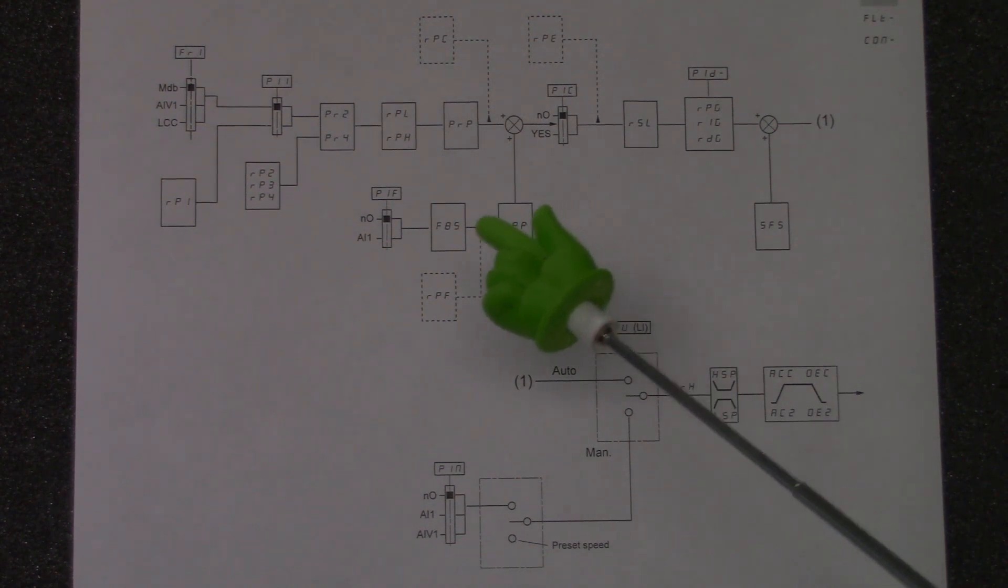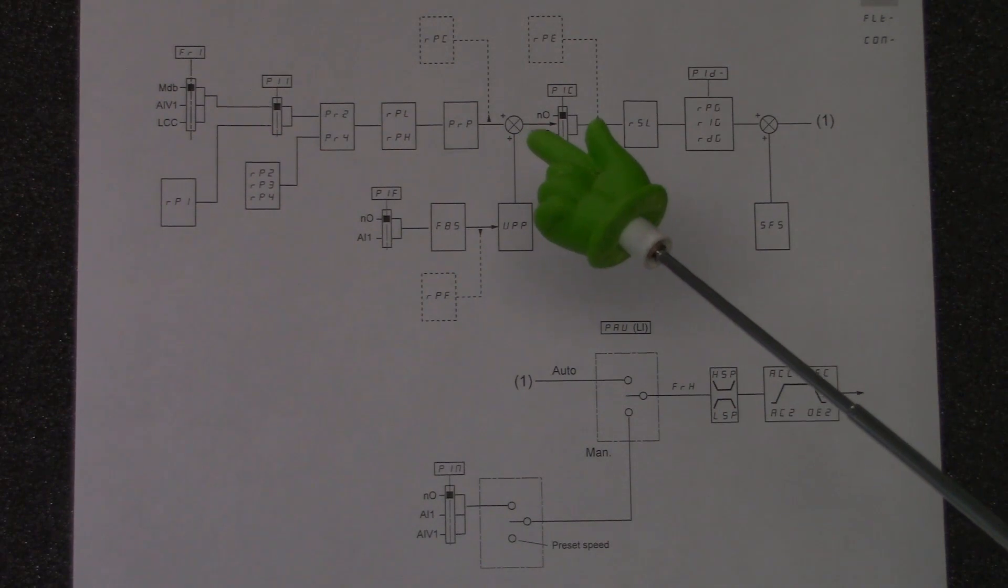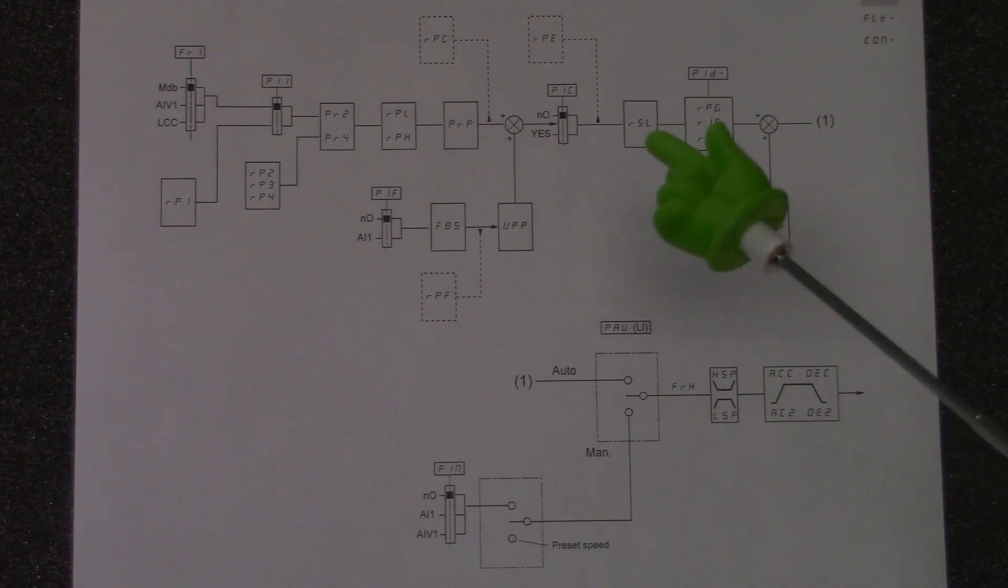And this is where we select our return from. The PIF parameter only having NO or AI1 as the selections. We then go into the error inversion loop. And then from there to the sleep and wake up values set inside the drive if required. We then have our normal gains.